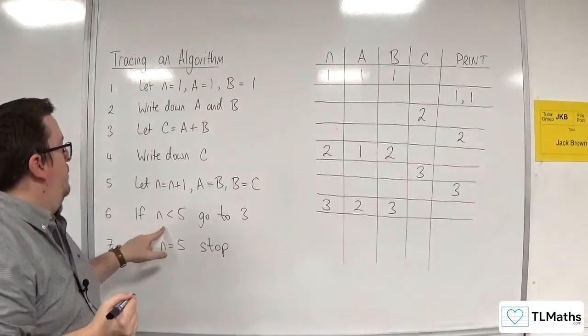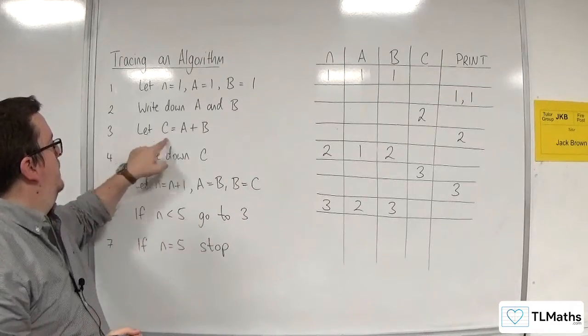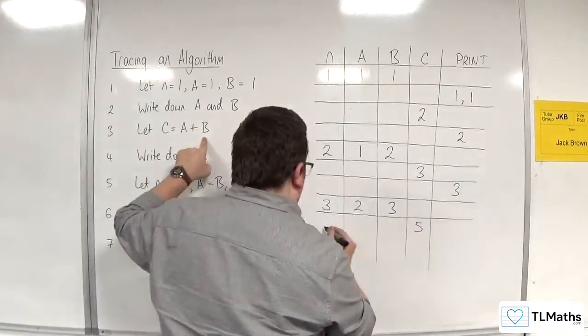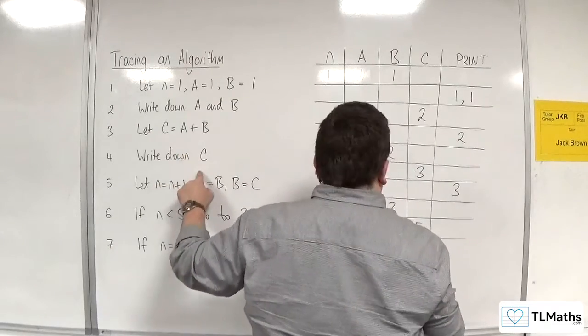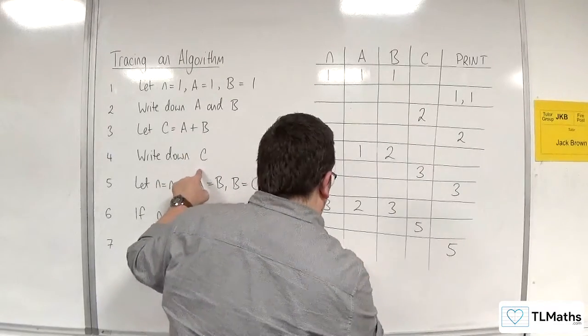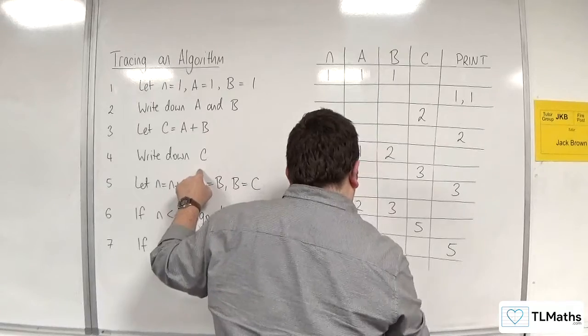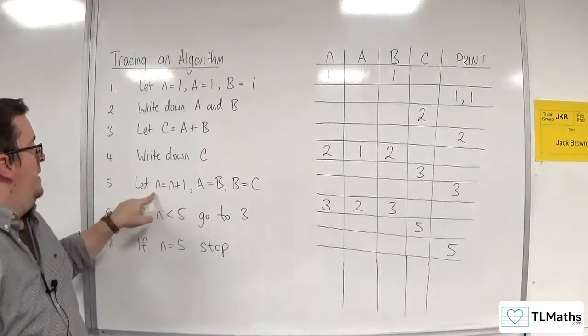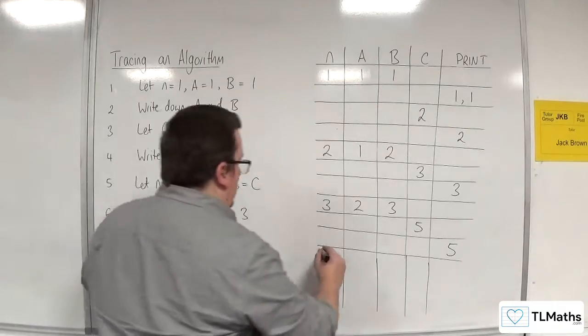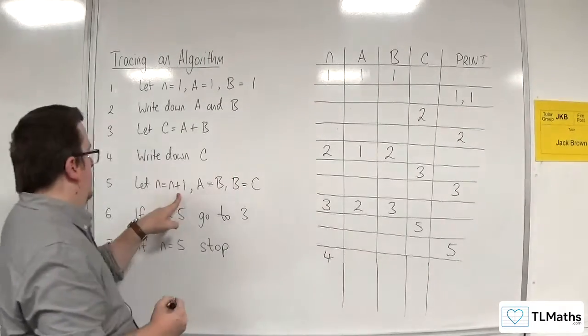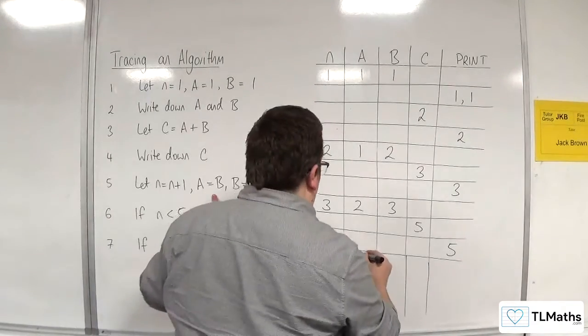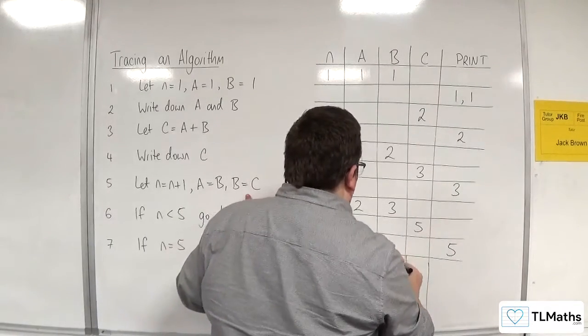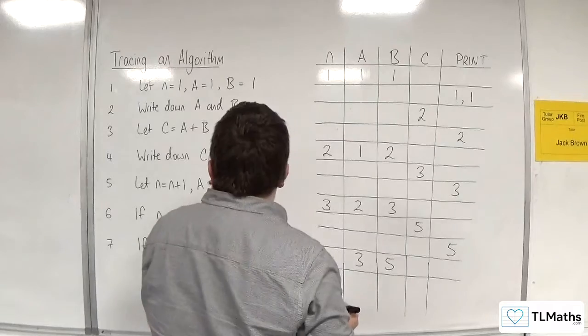If N is less than five, which it is, go to three. C is equal to A plus B, so two plus three is five. Write down C. Draw a line. Let N be equal to N plus one, so that's now four. A is equal to B, so three. B is equal to C, so that's five. Draw a line.